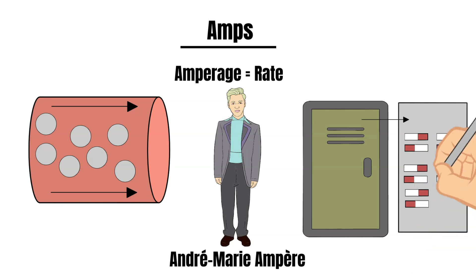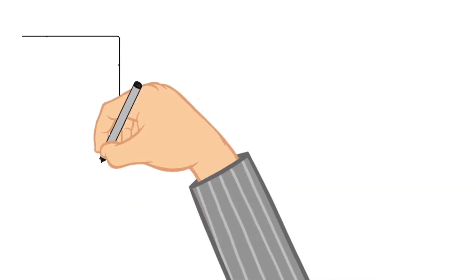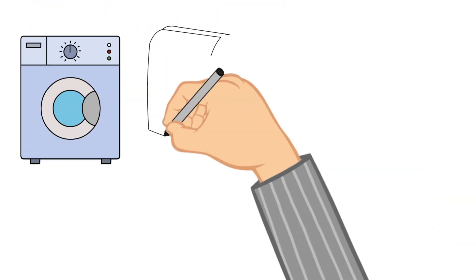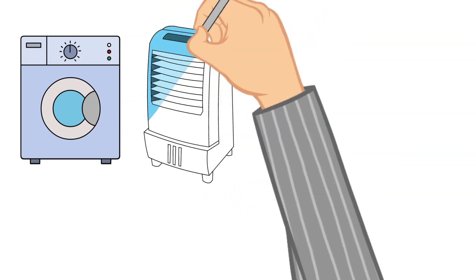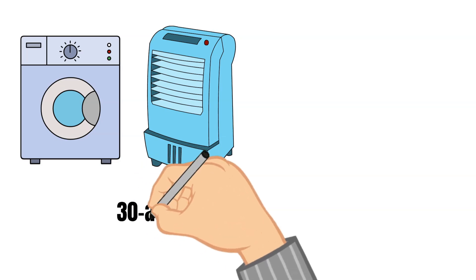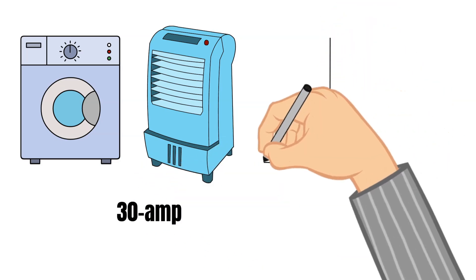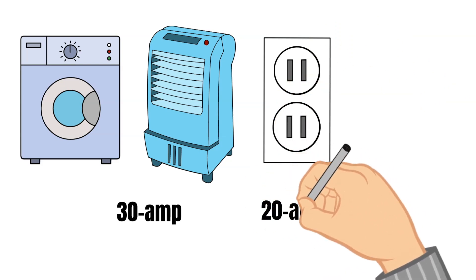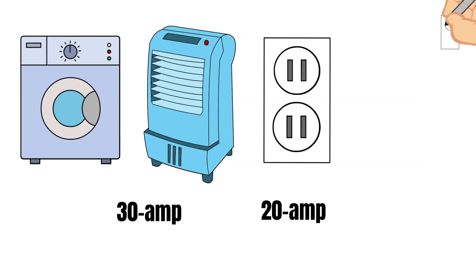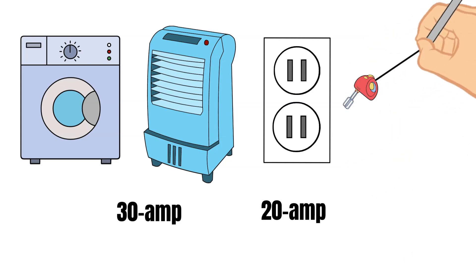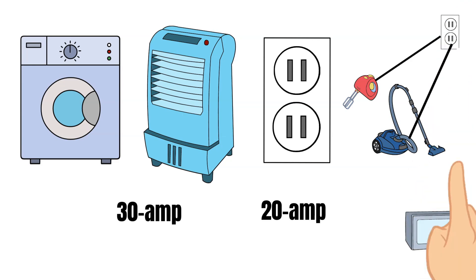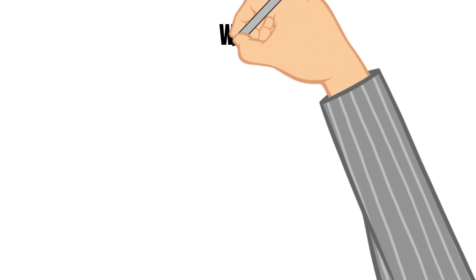The larger the amperage, the more electricity flows through the circuit. Large appliances like washers, dryers, and air conditioners will be connected to 30-amp circuits, while most outlets in a home are powered by 20-amp or 15-amp circuits. If you try to run too many appliances on the same circuit, the breaker will trip and cut off power in order to protect the wire from overheating.